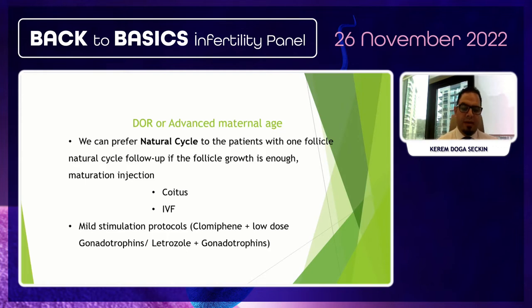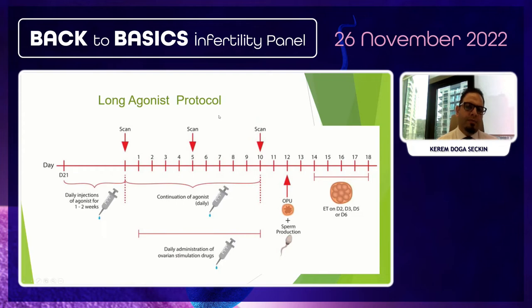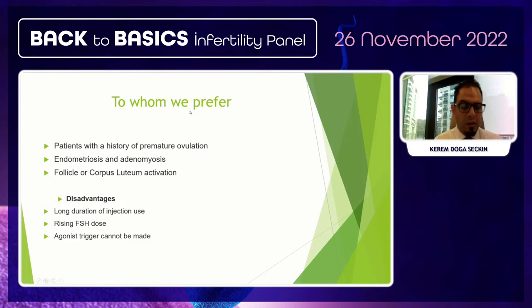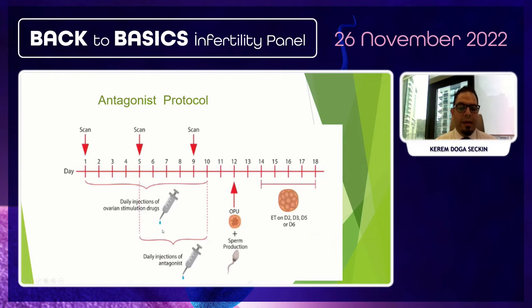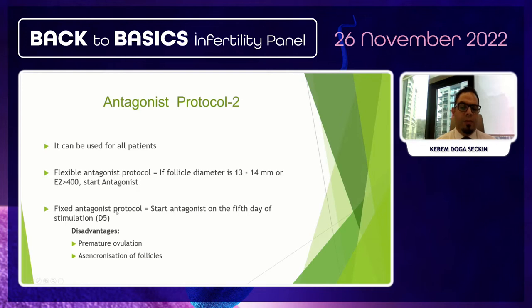The long agonist protocol is preferred in patients with premature ovulation, endometriosis, and adenomyosis, and can be useful for follicular cohort activation. Disadvantages include long duration of injections and increased risk of agonist flare. The antagonist protocol includes flexible and fixed protocols — the flexible antagonist is started when follicle diameter reaches 13 mm, while the fixed protocol starts antagonist on stimulation day 5.